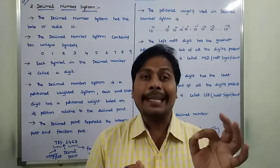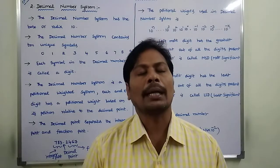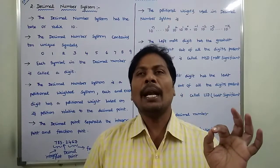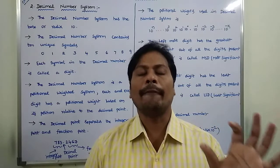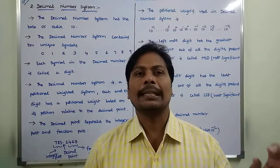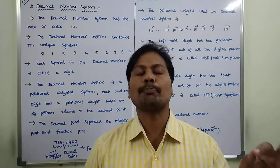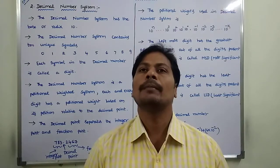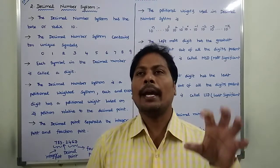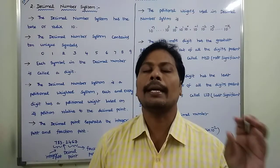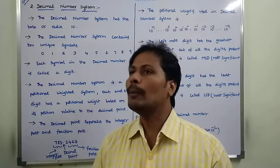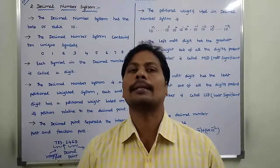Each and every digit in the given decimal number is called a decimal digit. The decimal number system is a positional weighted system, in which each and every digit is multiplied with the corresponding positional weight, giving us the given decimal number. The decimal number is a sequence of decimal digits starting from 0 to 9.